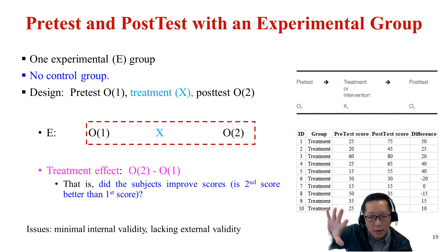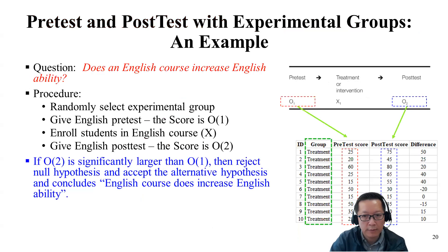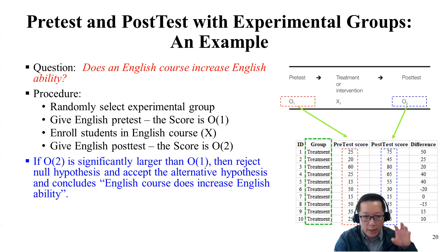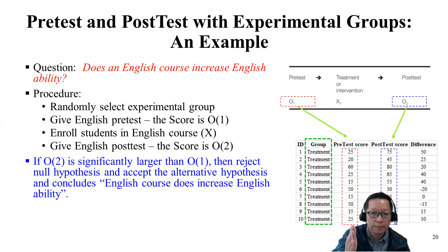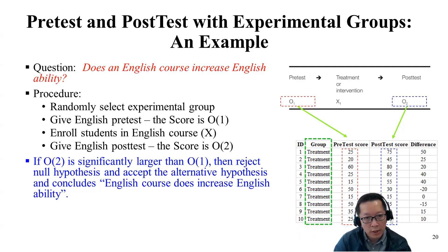Another example: if you want to know whether a course or training increases a certain ability for students, you can randomize people, give them a pre-test (O1), run the training, and measure again at O2. If O2 is more favorable than O1, it supports the hypothesis that the training increases students' ability.